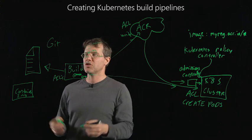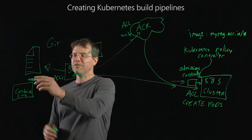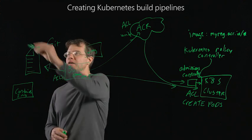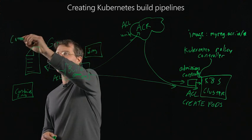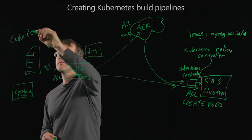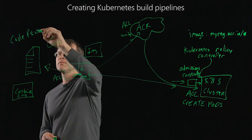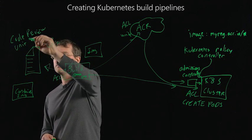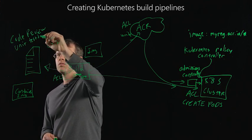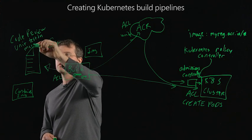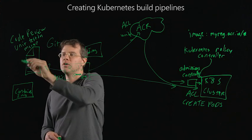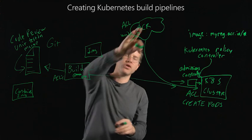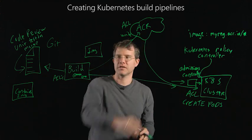A best practice is to ensure that everything has to be checked in in order to be pushed through the build pipeline. This ensures that things like code review and unit testing, which are part of what it means to merge code, are always applied to the things that you build and push into the registry and deploy into your cluster.